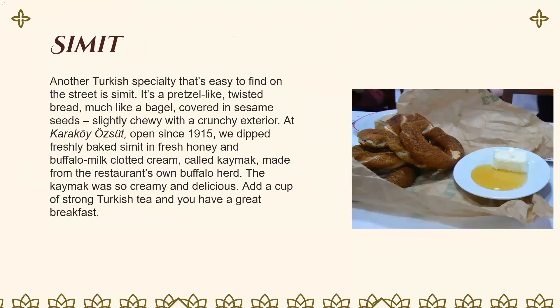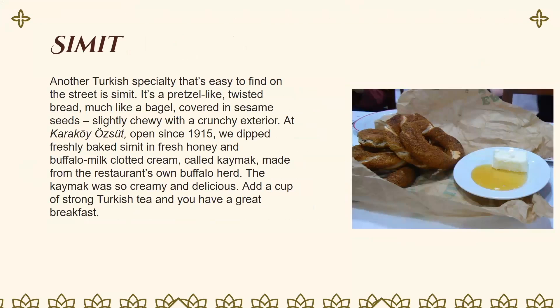Regarding the cuisine: Simit is a Turkish specialty easy to find on the street — it is a pretzel-like twisted bread made like a bagel, covered in sesame seeds, and slightly chewy on the exterior. At Karaköy Güllüoğlu, open since 1915, they dip the simit in honey and buffalo milk clotted cream called kaymak, made from the restaurant's own buffalo herd. The kaymak is creamy and delicious, and with a cup of strong tea you have a great breakfast.